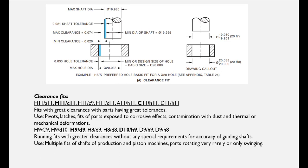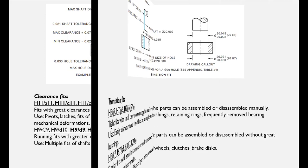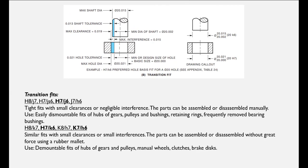A clearance fit always enables a clearance between the hole and shaft in a coupling — the lower limit size of the hole is greater than or at least equal to the upper limit size of the shaft. A transition fit is one where both clearance and interference may occur in a coupling — the tolerance zone of the hole overlaps with the shaft tolerance zone.